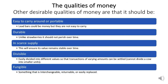Other qualities of money are that it should be easy to carry around, or portable — lead bars could be money, but they are not easy to carry. Durable: unlike strawberries, it should not perish over time. Ideally, it should be in scarce supply — this will ensure its value remains stable over time. Divisible: easily divided into different values so that transactions of varying amounts can be settled. You could not divide a cow into smaller units, at least not without killing it, and then it would be created into meat which is perishable over time. And fungible: something that is interchangeable, returnable, or easily replaced.